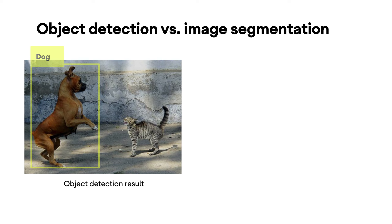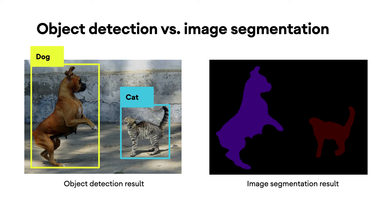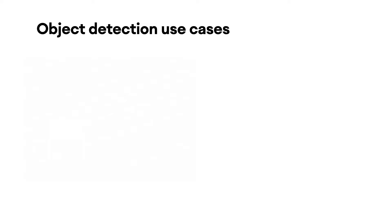Image segmentation is similar to object detection in that it also tells you where the objects are in the image. However, instead of returning bounding boxes, it returns a mask that tells you which pixel belongs to which object.